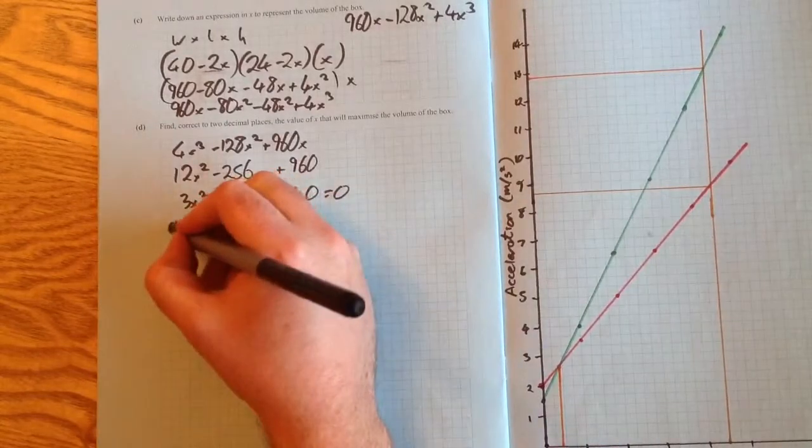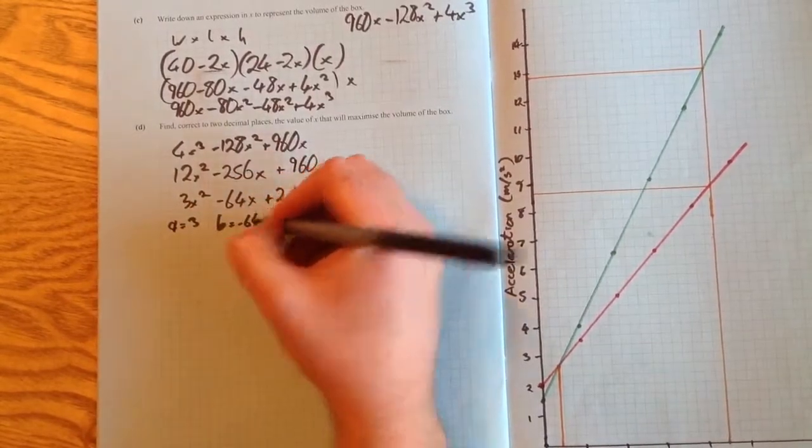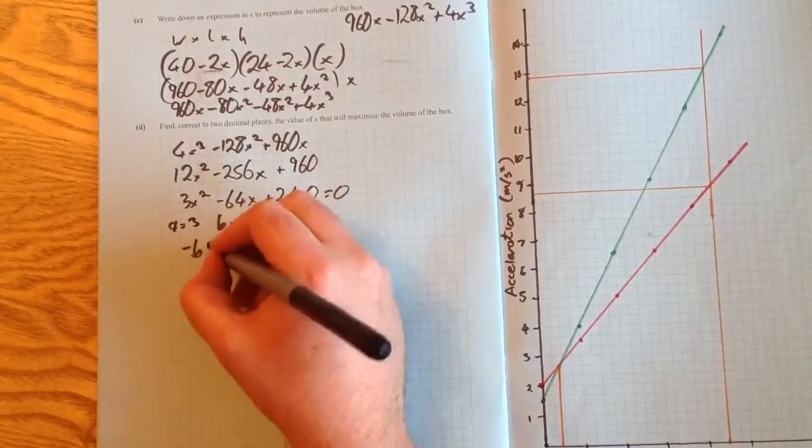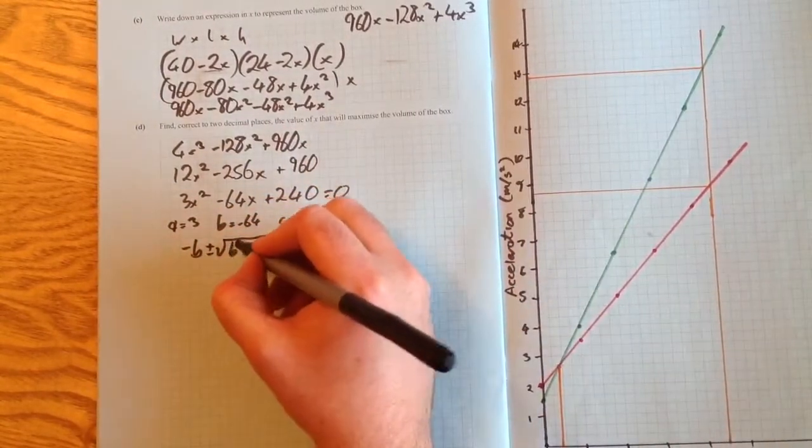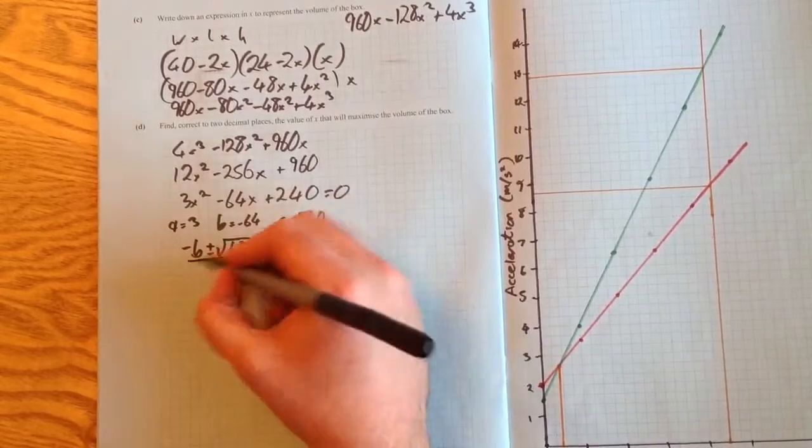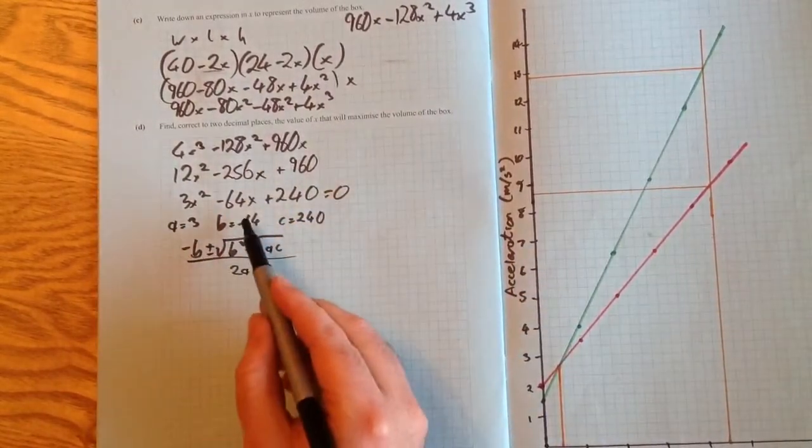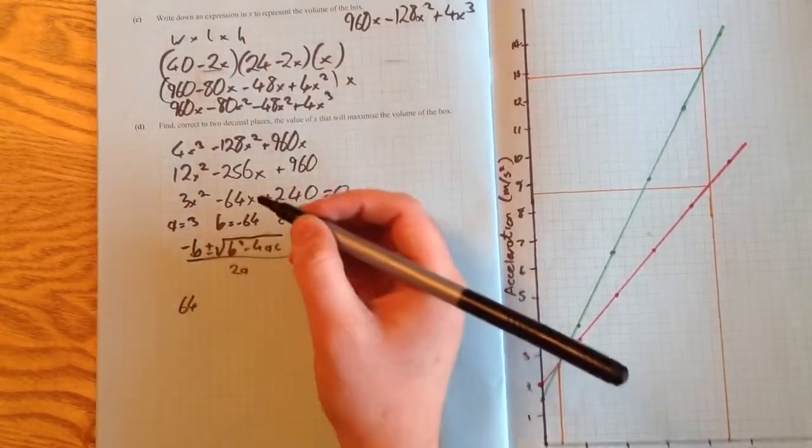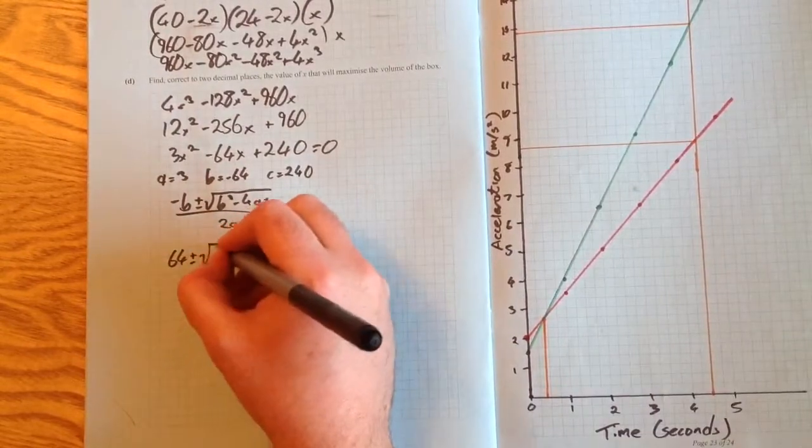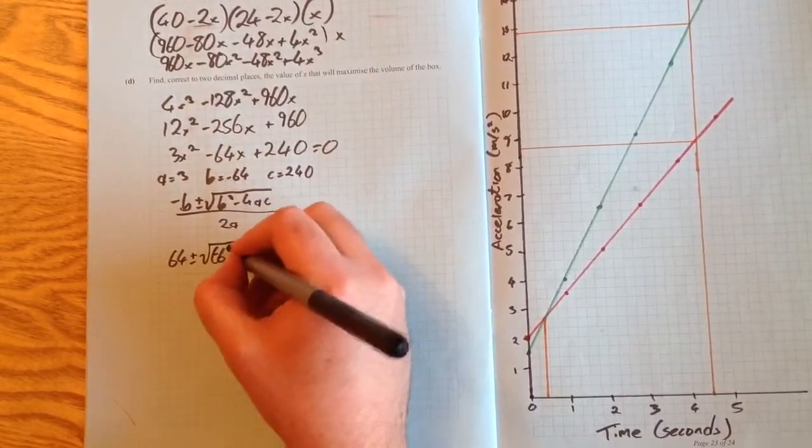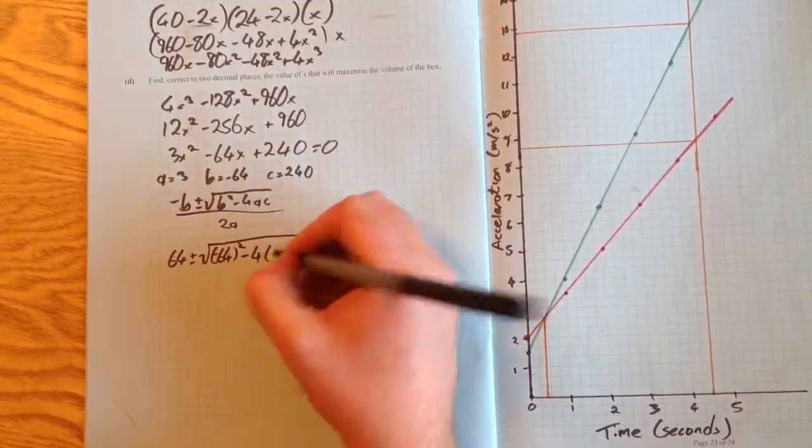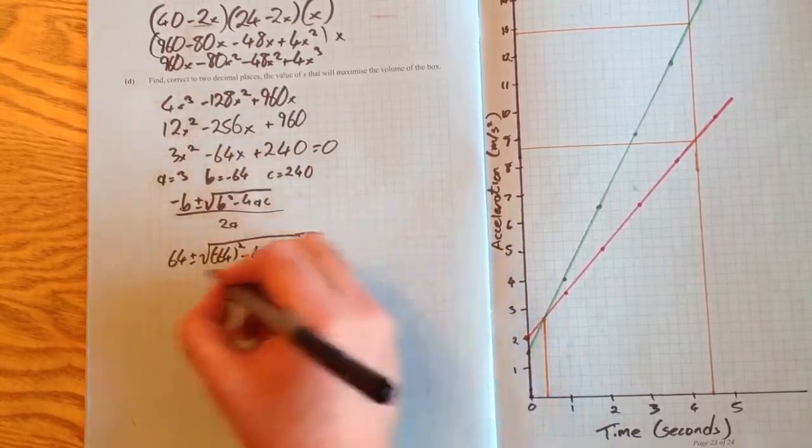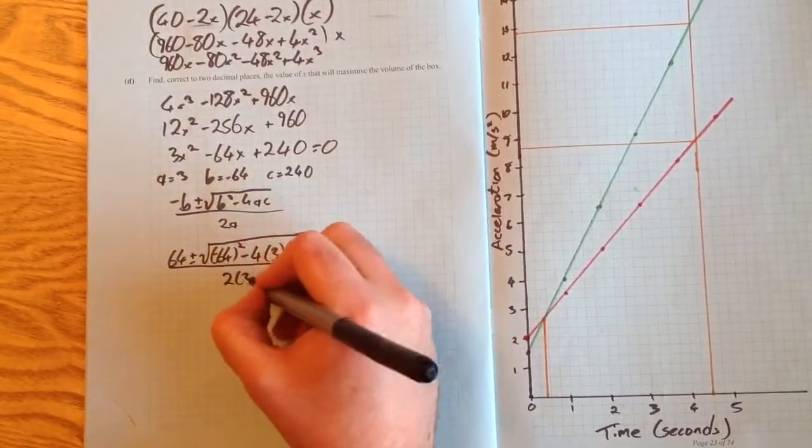So a equals 3, b equals minus 64, and c equals 240. We're using the quadratic formula: minus b plus or minus the square root of b squared minus 4ac, all over 2a. Minus b is plus 64 because two negatives make a positive. Plus or minus the square root of minus 64 squared, minus 4 times 3 times 240, all over 2 times 3.